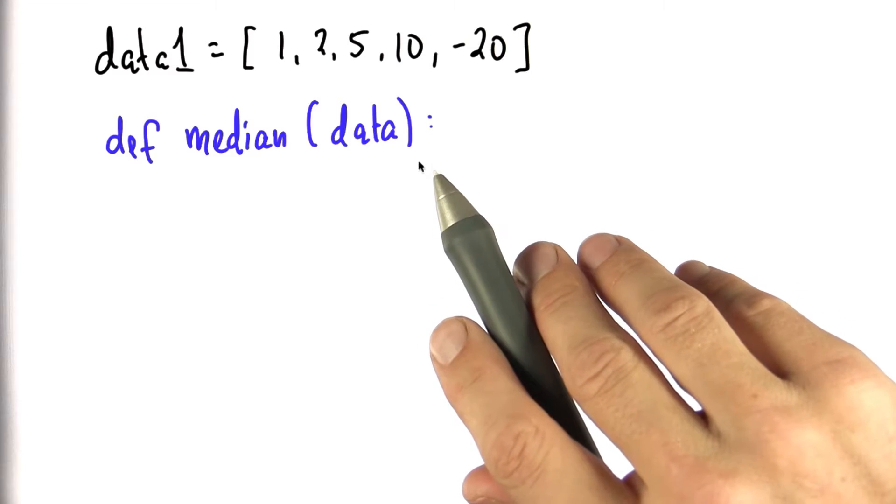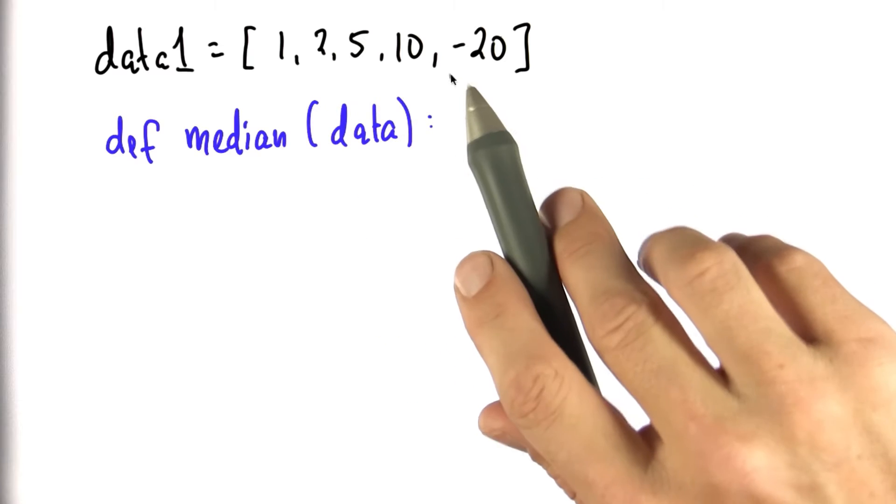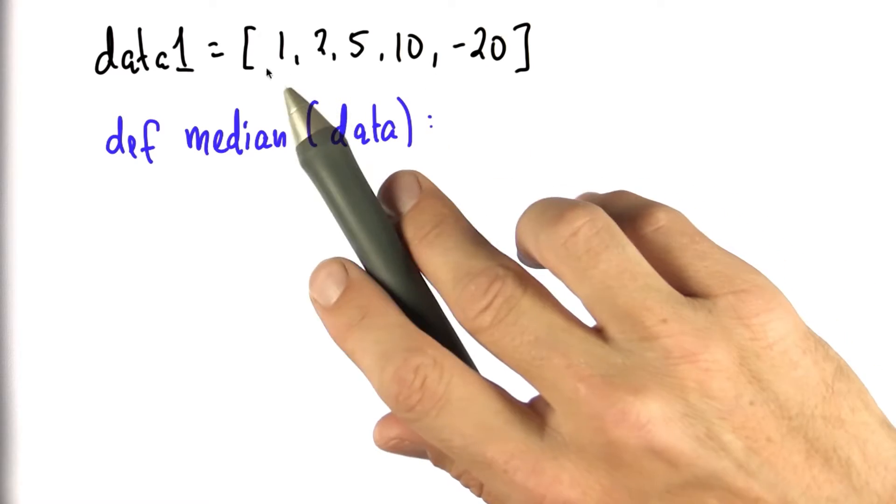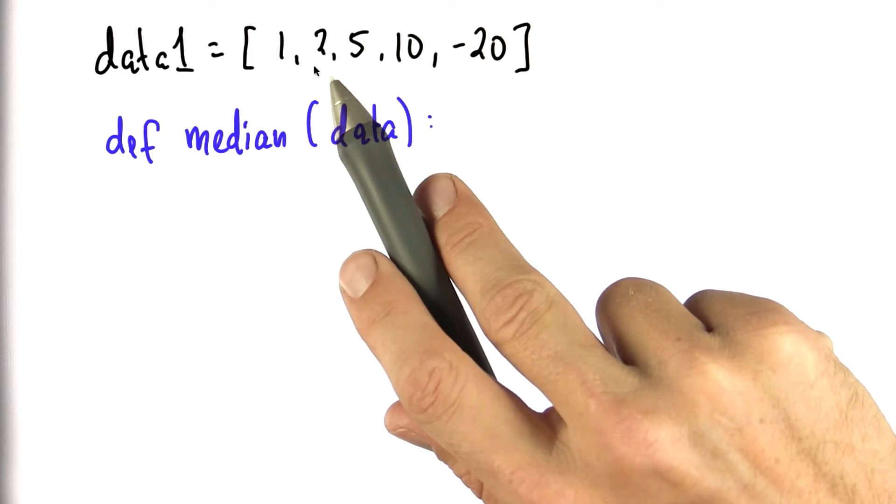Slightly more challenging to program is the function median. The median of this list is the middle element of the sorted list, which in this case will be 2.